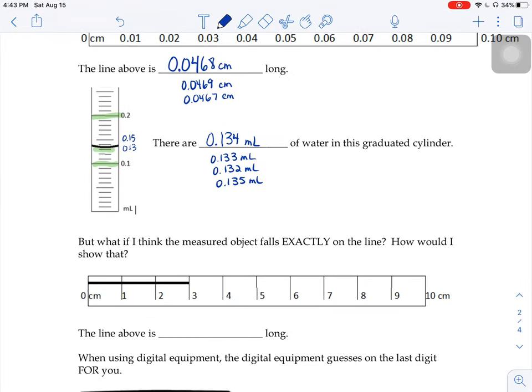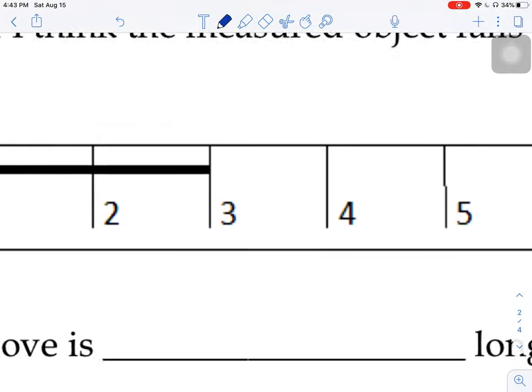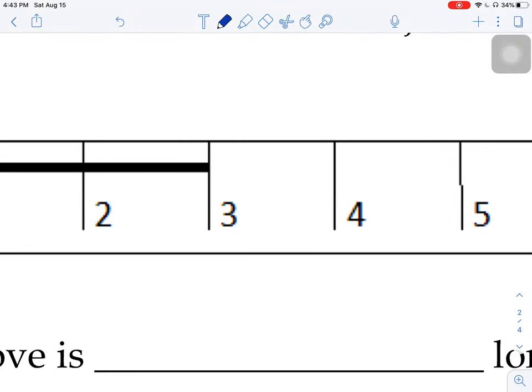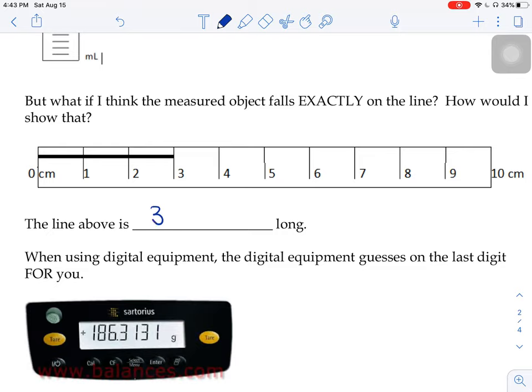But what do you do if you think that the measured object falls exactly on the line? How do you do that? Because this one, even when we zoom in, it looks like it's just right on the 3. So the 3, we think it's 3, right? And we think that it lands exactly on the line. So the way you show that is by tacking on a 0. Perhaps that line is really 2.9 centimeters long or 3.1 centimeters long. Perhaps. We're not certain that it's landing right on the line, but we think so. So we think it's right on the line, so we add our guessed digit of zero.